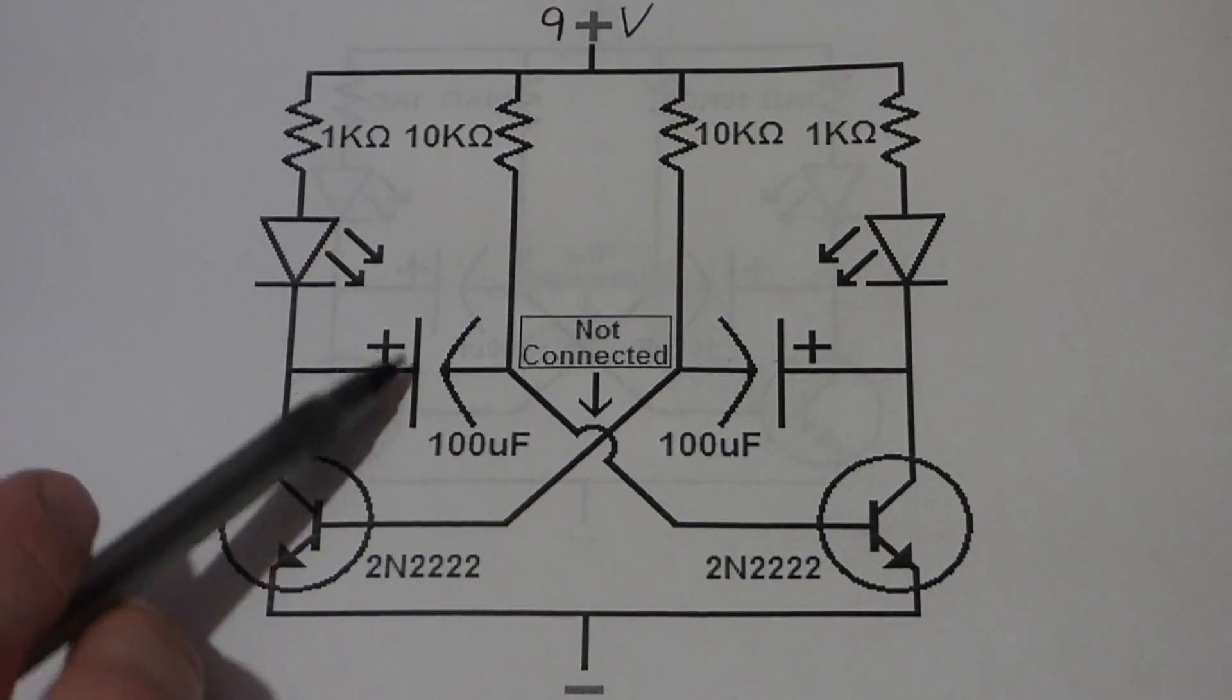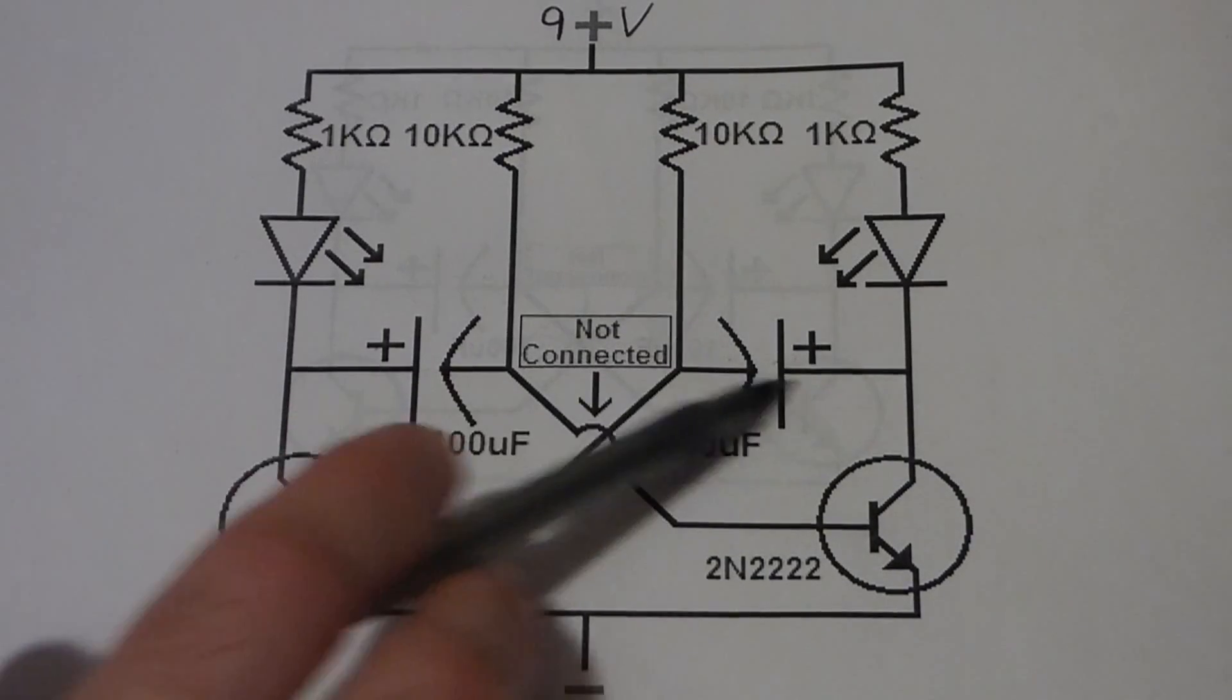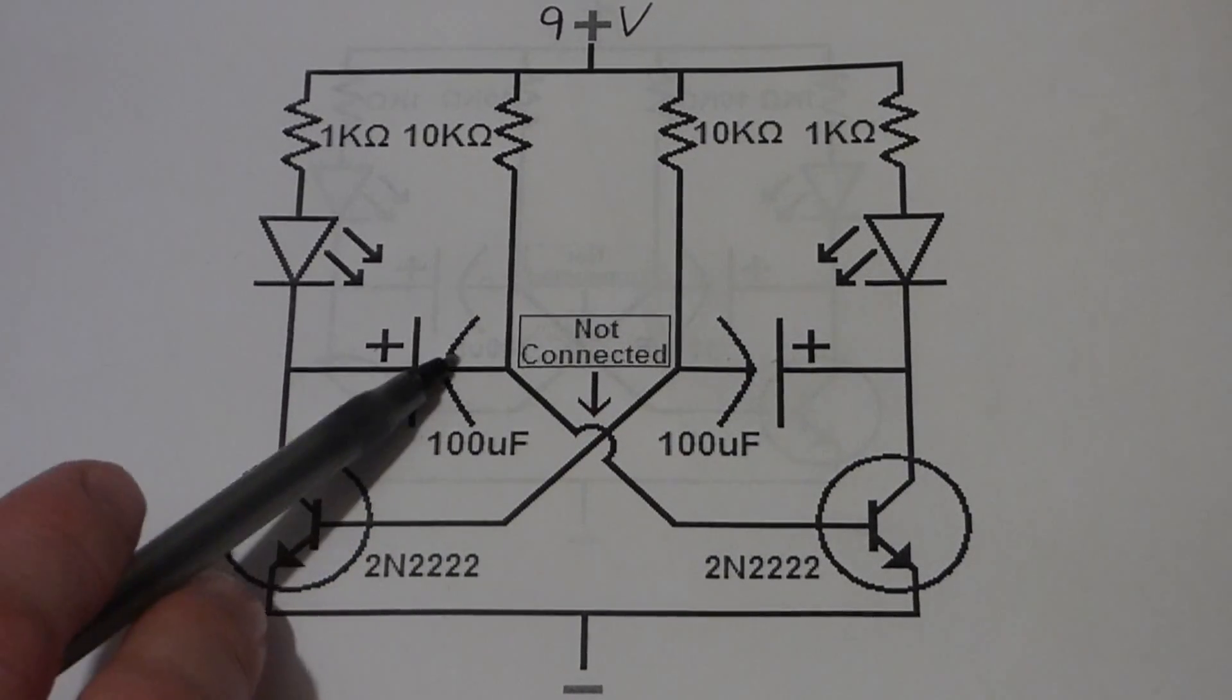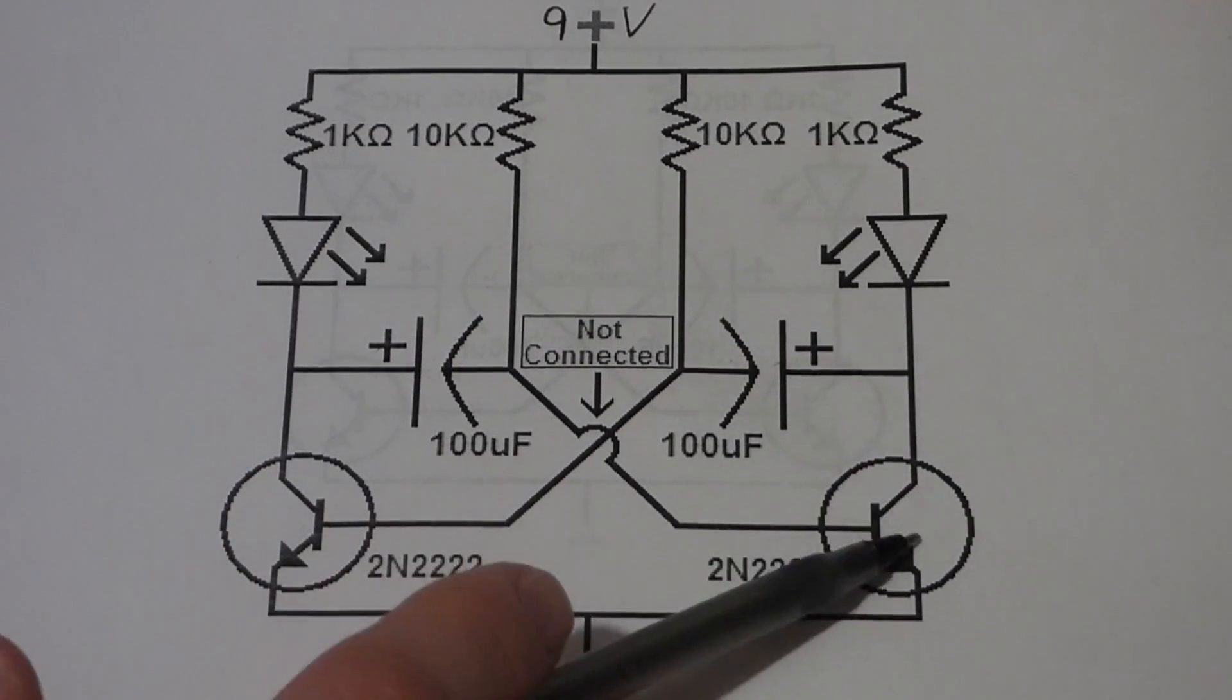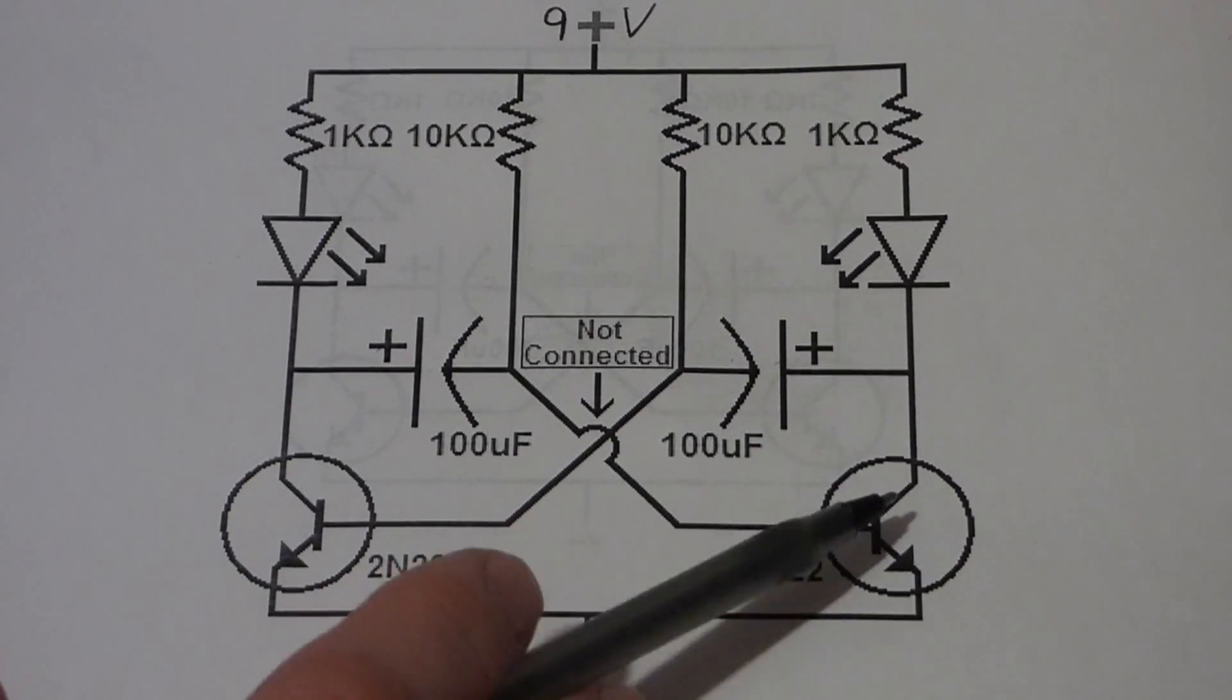So now once one capacitor gets charged, as I said this capacitor is not getting charged. Then it will stop pushing this positive current to the base of the transistor and it will turn off.